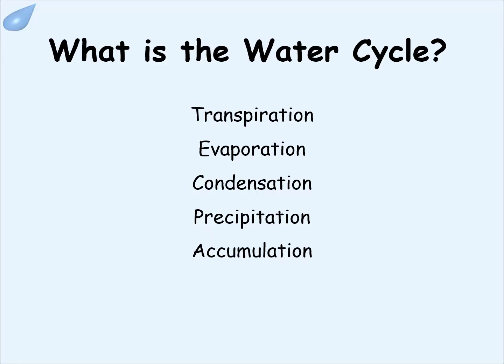What is the water cycle? The water cycle is made up of five processes: transpiration, evaporation, condensation, precipitation, and accumulation. Let's investigate how each of these processes work to keep water from billions of years ago moving around the Earth.